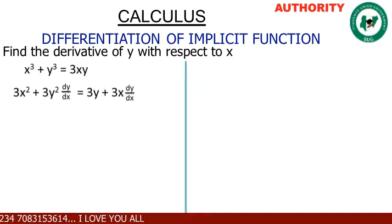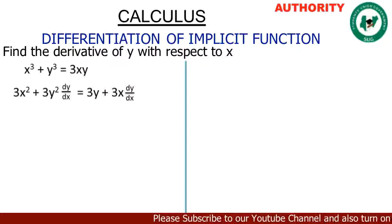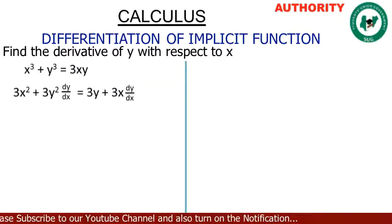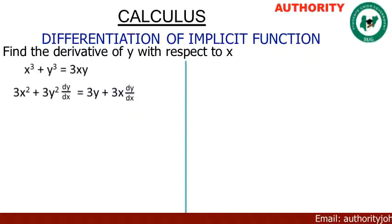Now for 3xy on the right side, we apply the product rule. Differentiate x multiplied by y multiplied by 3, plus differentiate y multiplied by x multiplied by 3. The differentiation of x gives 1, so 1 times y times 3 gives 3y. Then differentiating y gives dy/dx, so dy/dx times x times 3 gives 3x dy/dx.